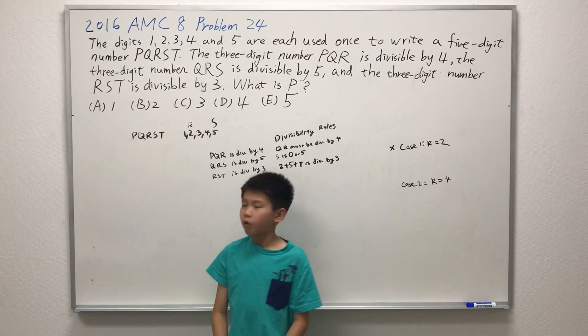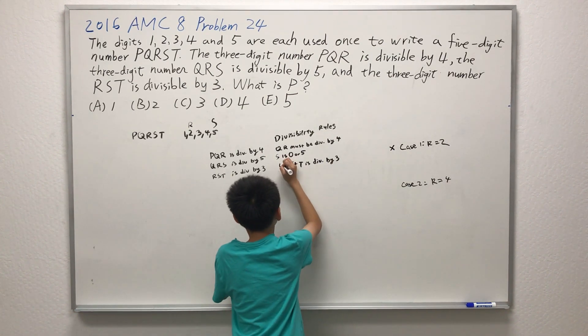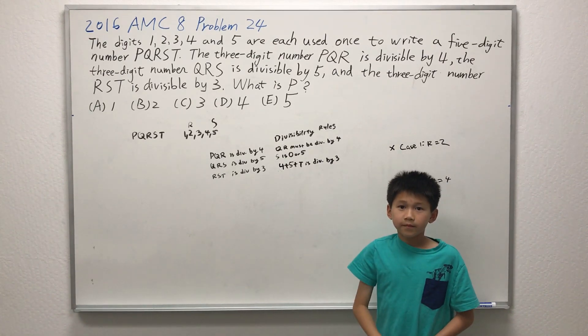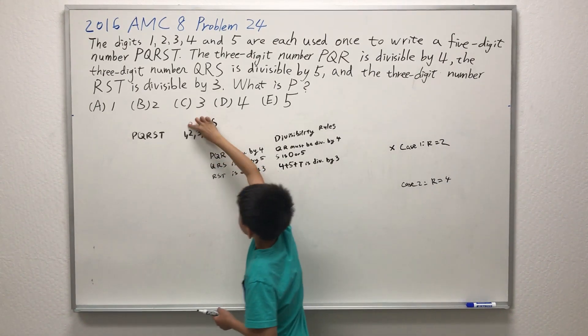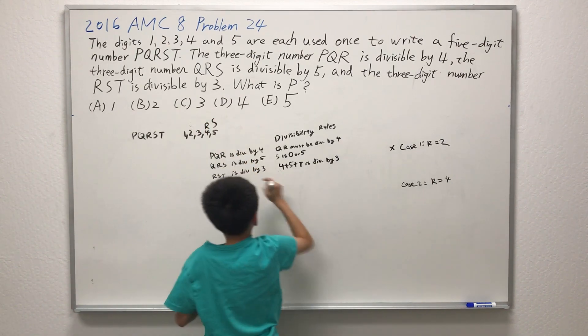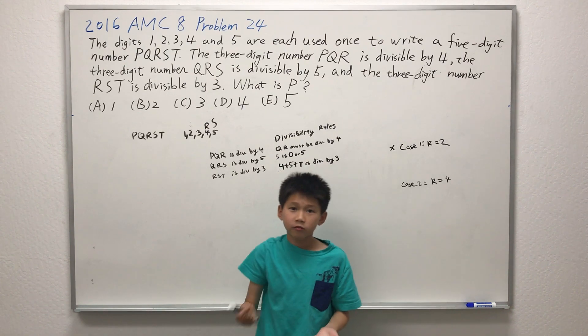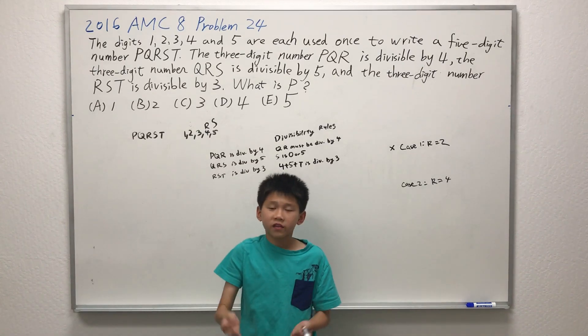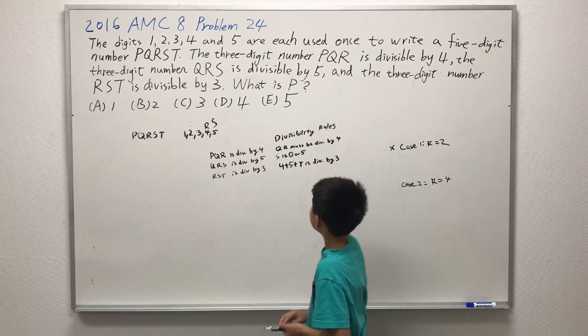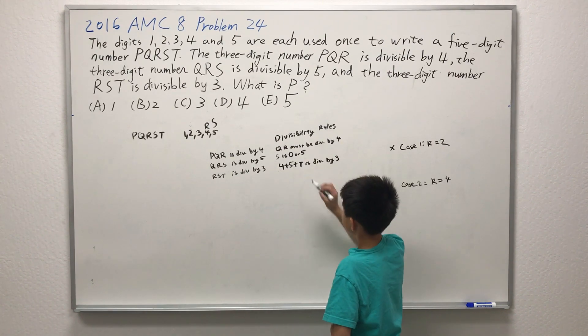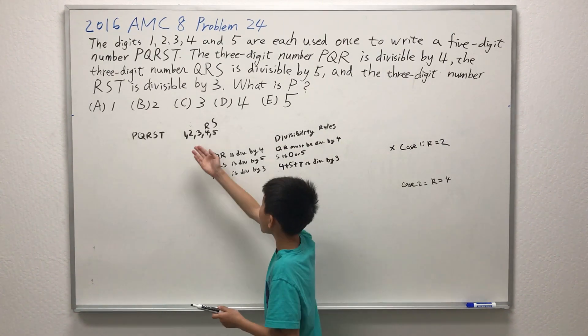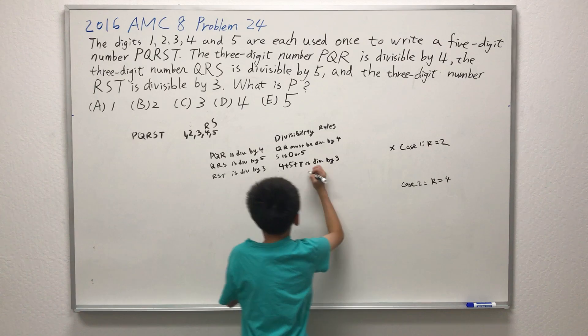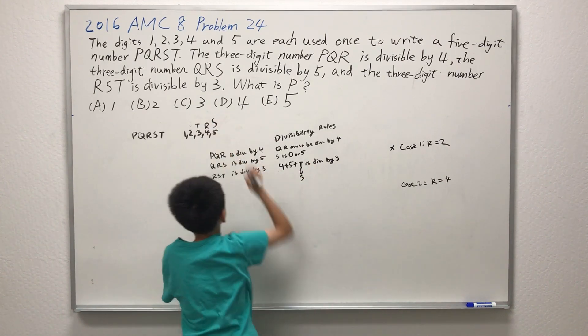Let's move on to case 2 where R is equal to 4. So 4 plus 5 plus T is divisible by 3. Let's try where T is equal to 1. 4 plus 5 plus 1, 10, is not divisible by 3. Let's move on to 2. 4 plus 5 plus 2 is equal to 11, which is not divisible by 3. Let's move on to the value of T being 3. 4 plus 5 plus 3, 12, is divisible by 3. And it's not repeating any of them. It is the only original one right now. So that means that T can equal 3. Thus, T is equal to 3.